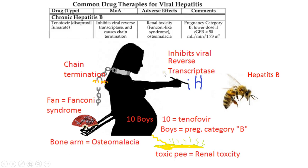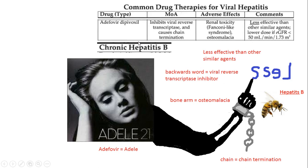Next we have the drug adefovir. When I see 'ad,' I think Adele, so if you see adefovir think Adele. It inhibits viral reverse transcriptase and causes chain termination. In the picture, Adele is transcribing something backwards for reverse transcriptase, and it says 'less' because it's less effective than other similar agents. The chain around her arm is for chain termination.